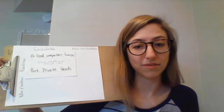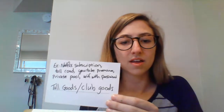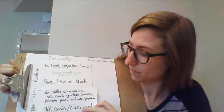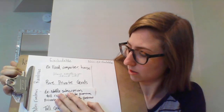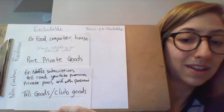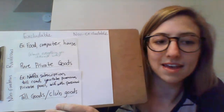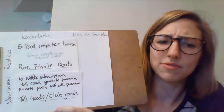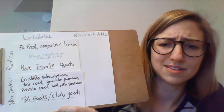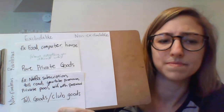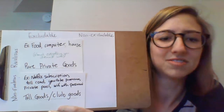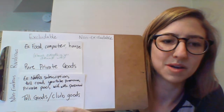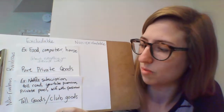Next is the non-rivalrous but excludable goods. These are the toll goods or club goods — excludable, non-rivalrous. A Netflix subscription is a good example: it's excludable because you have to pay to get one, but it's non-rivalrous because you having a Netflix subscription doesn't limit other people's ability to also get one. As many people as Netflix servers can reasonably hold can get a subscription, no problem.